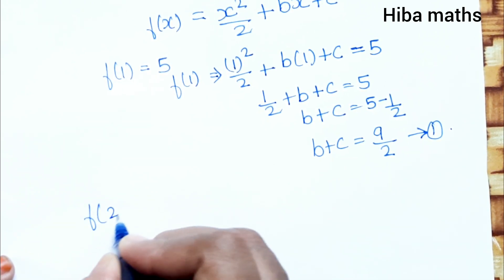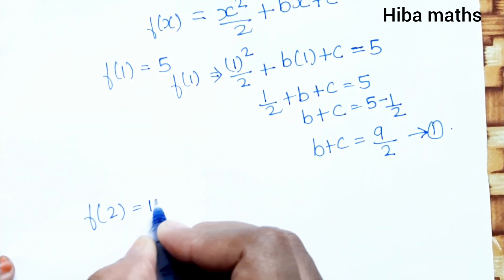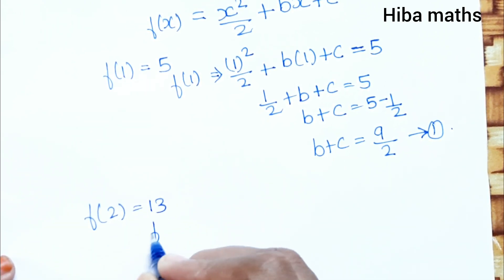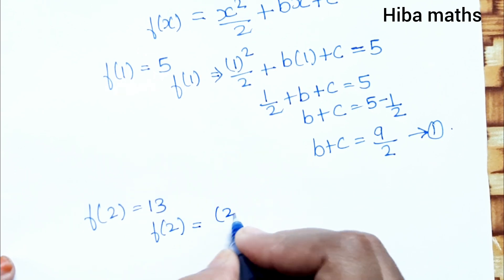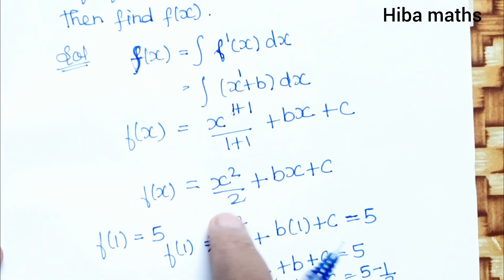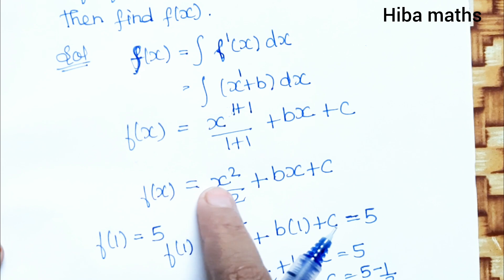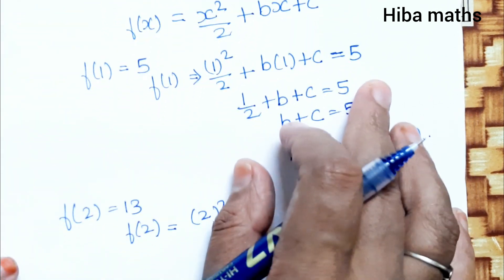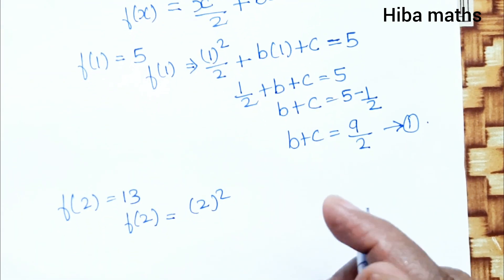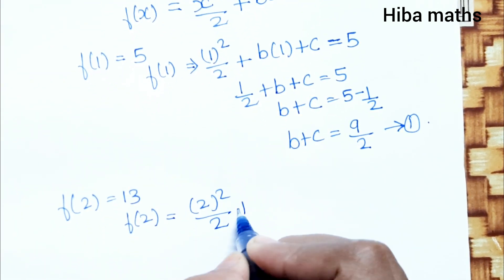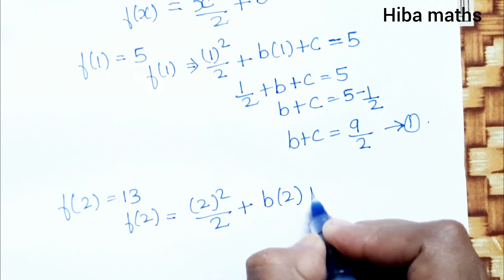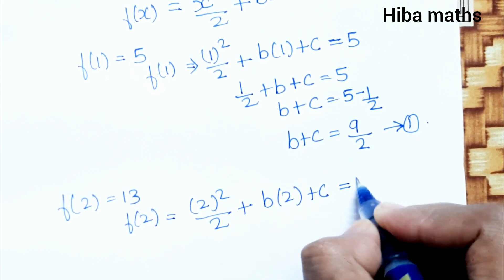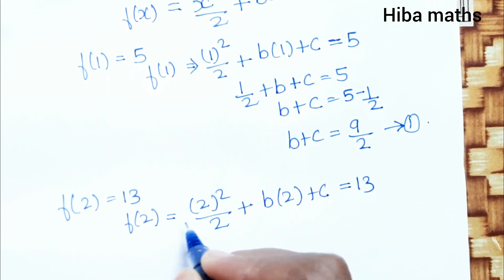Now applying f(2) is equal to 13. We substitute x equals 2: 2 squared divided by 2 plus b times 2 plus c is equal to 13.